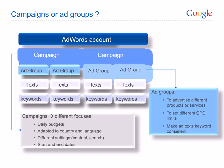For example, an ad group for shoes with keywords such as sandals, tennis shoes, boots and more could be divided but still belong to the same shoe campaign. You can also create an ad group to set different CPCs for a particular group of keywords.